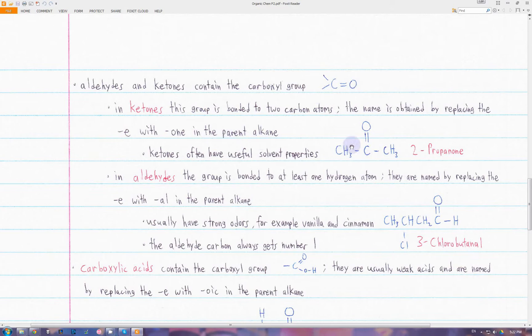Over here, this is based on propane because the chain has three carbons. We have to indicate the position of the oxygen which is double-bonded to this carbon at position two, so this molecule is 2-propanone. Ketones often have useful solvent properties, which means they can dissolve many things.